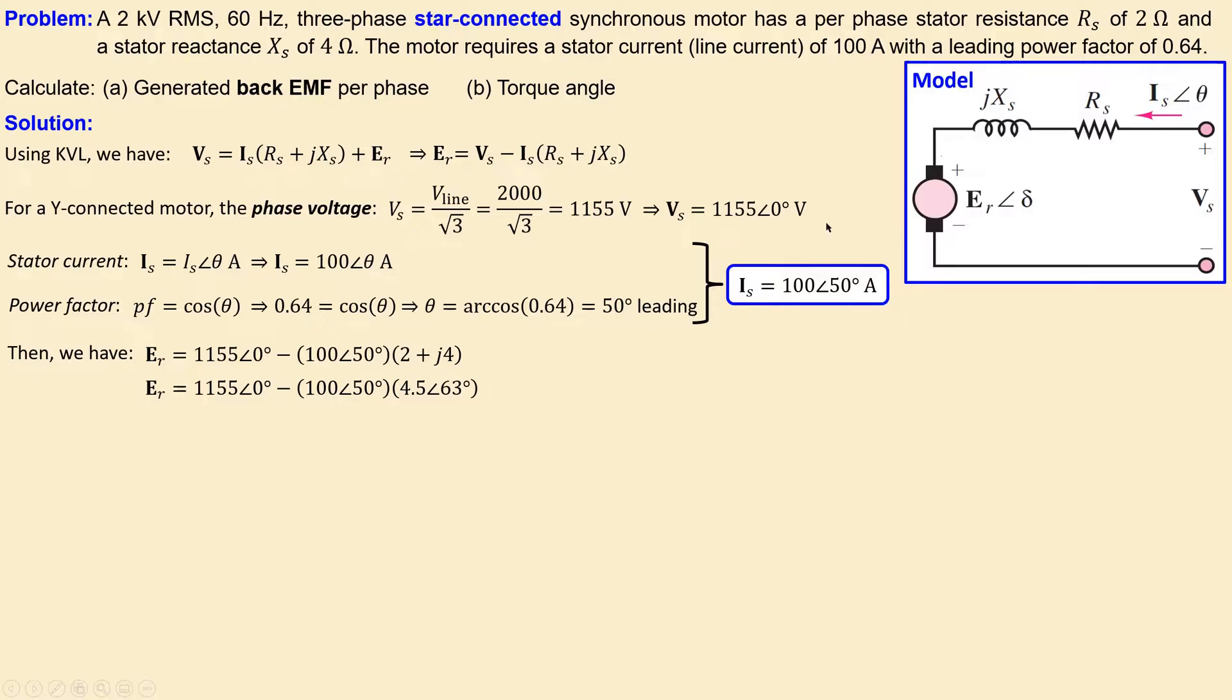We convert the resistor and reactance into one combination, as we did for the current and phase voltage. Then we have this expression. To calculate, we multiply the magnitudes and add the phases, which gives us this result.